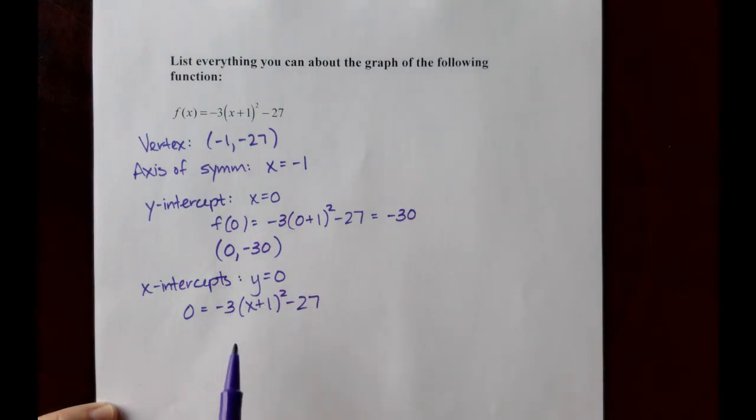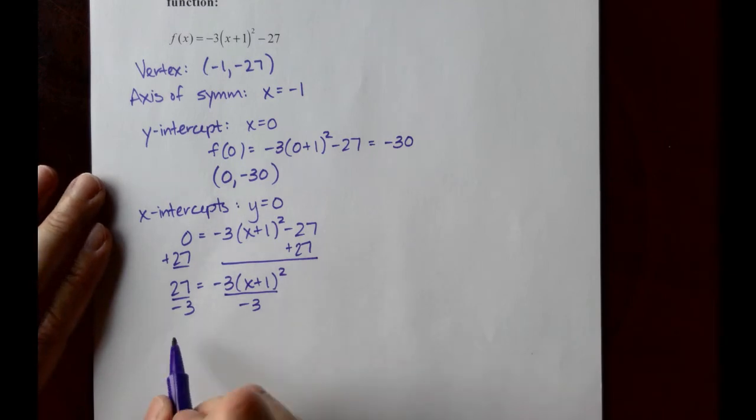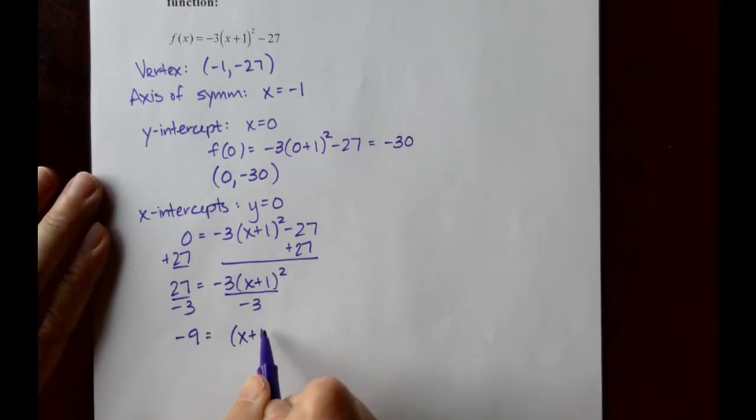And in this format the square root property is really handy for solving for x. We'll add 27 to both sides of the equation. That will give us 27 equals negative 3 times the quantity x plus 1 to the second. Then divide both sides of the equation by negative 3.